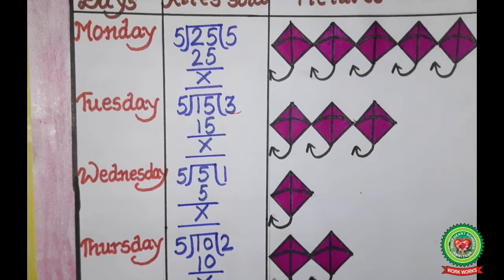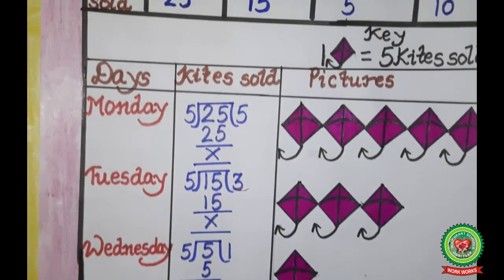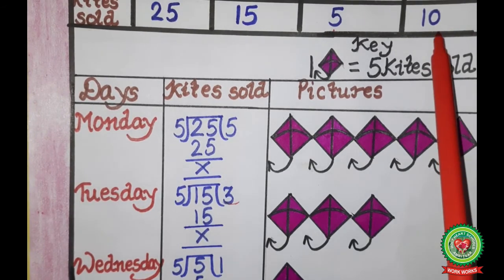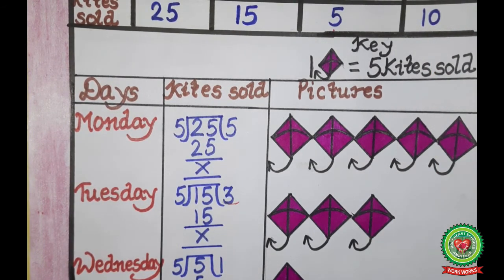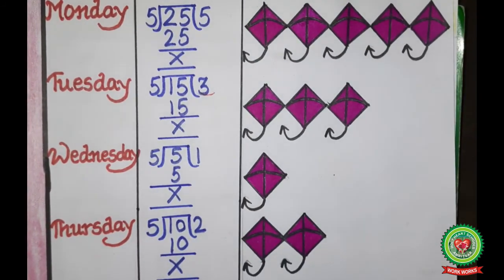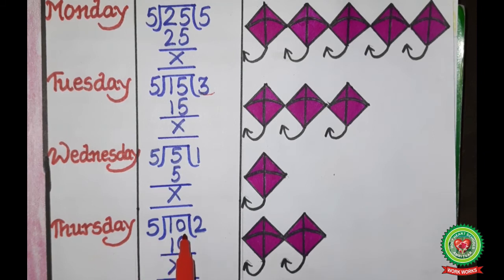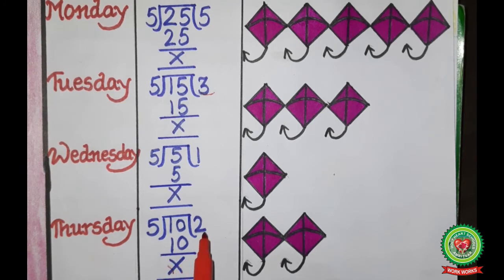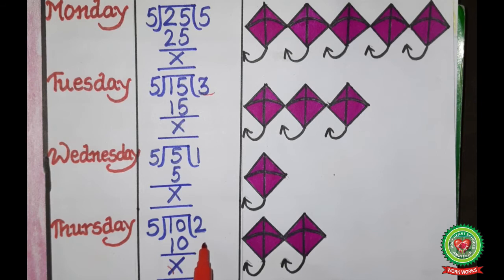The last number is 10. Divide 10 by the key, which is 5. On the 5 times table, 10 comes at 2 — so 5 twos are 10, remainder 0. The quotient is 2, so we draw 2 kite pictures for Thursday. In this way, we can draw a pictograph.